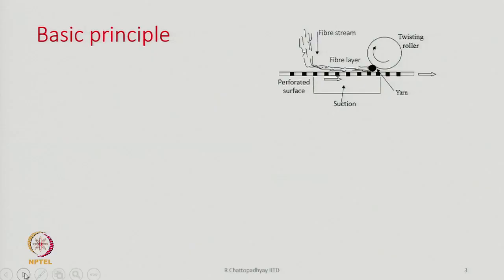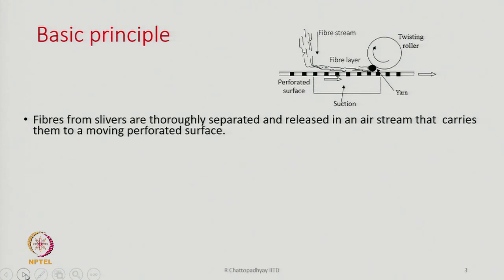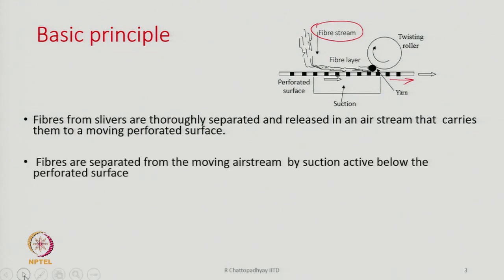Basic principle: fibers from a sliver or from a group of slivers are thoroughly separated from each other by some means, mostly with the help of opening rollers. These separated fibers are then released into an air stream that carries them to a moving perforated surface, as shown in the diagram. We generate a stream of fibers and the stream of fibers will be landing on a perforated surface.